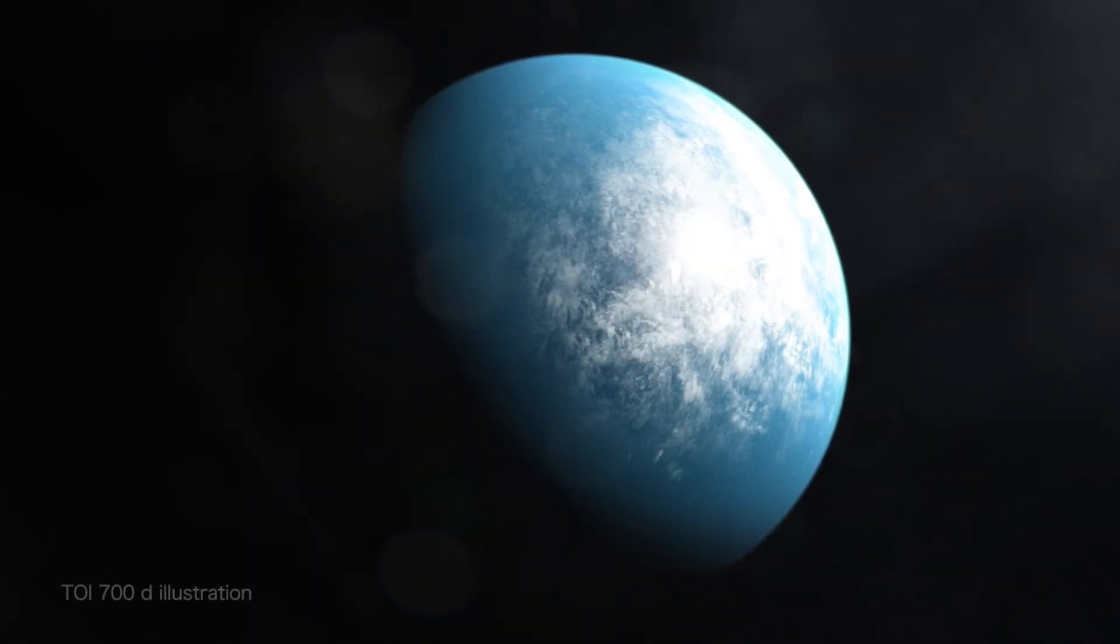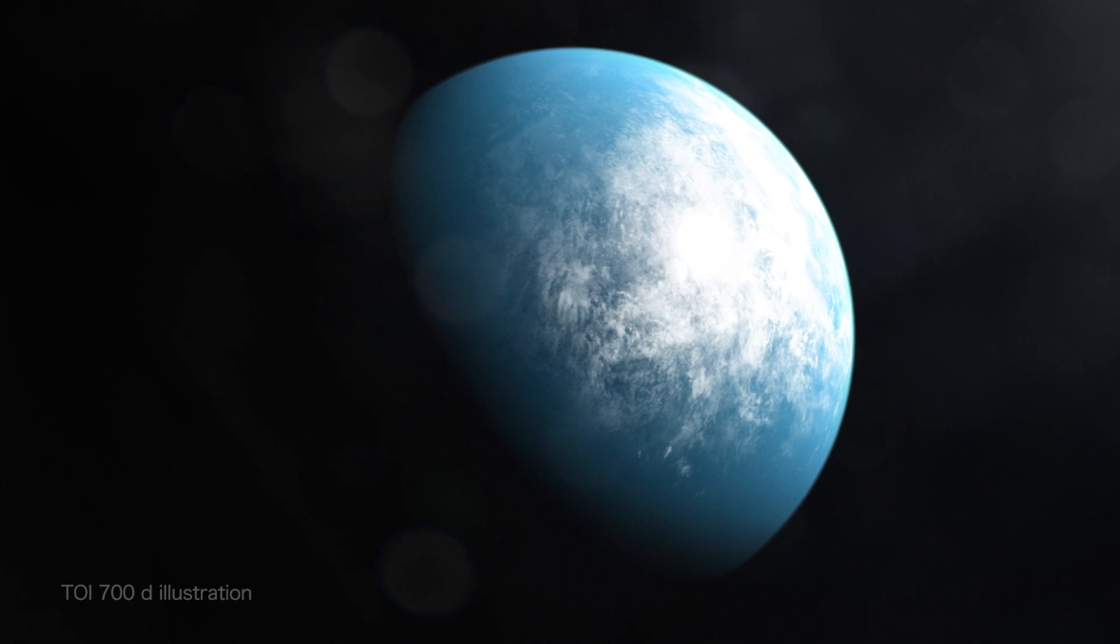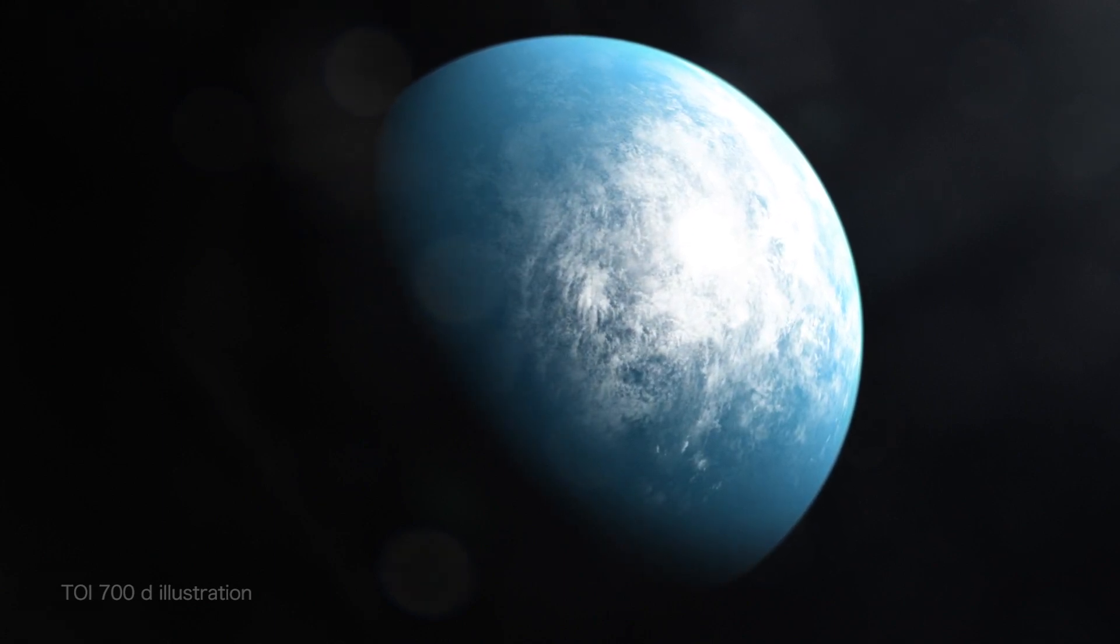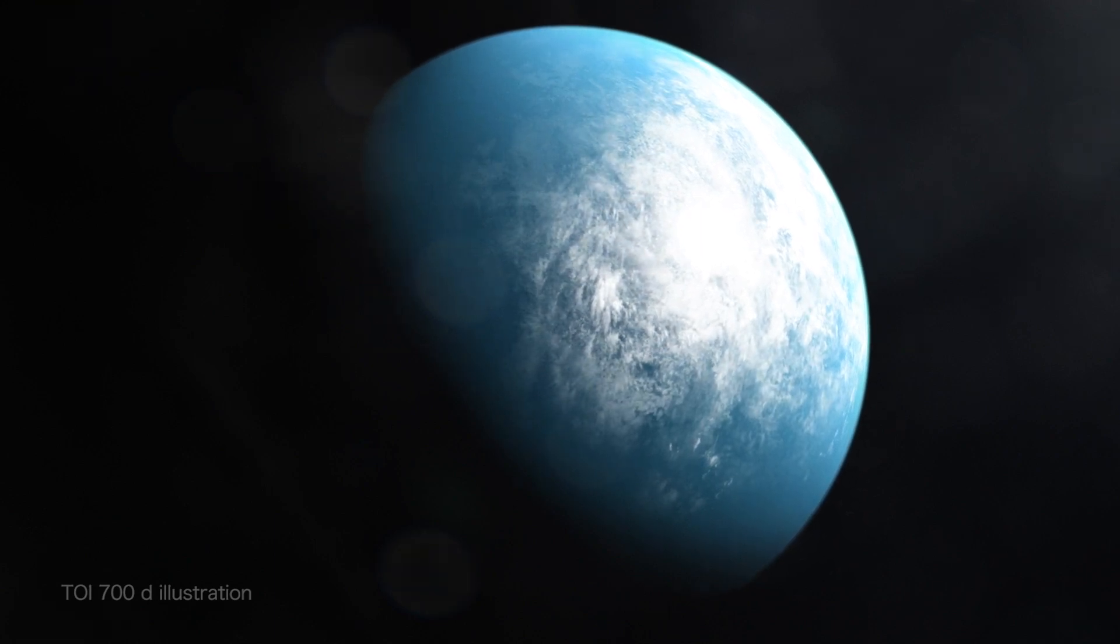NASA's TESS mission has found its first Earth-sized world in its star's habitable zone. This means the planet, called TOI-700D, has the potential for liquid water on its surface.